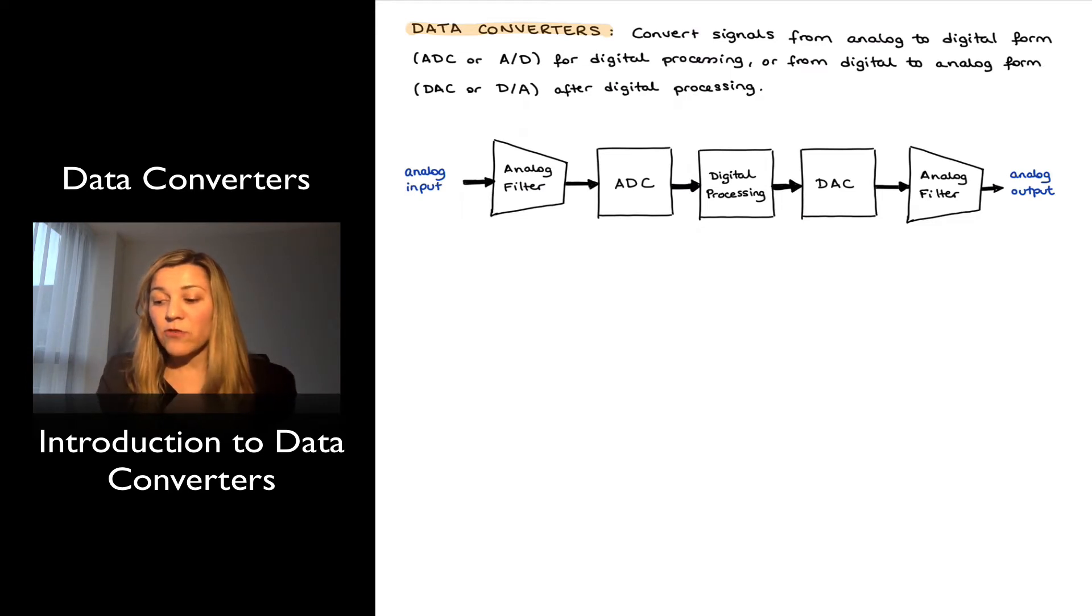So, in general, a data converter is a circuit that converts a signal either from analog to digital form in the case of an ADC, or from digital to analog form in the case of a DAC.